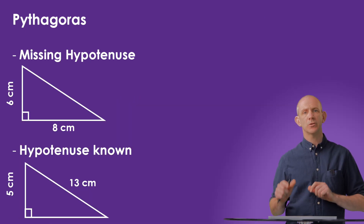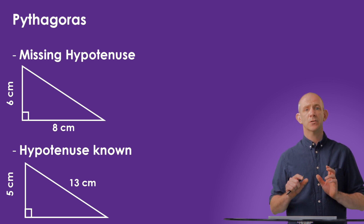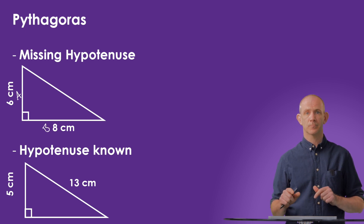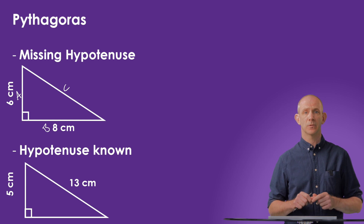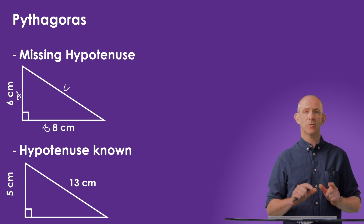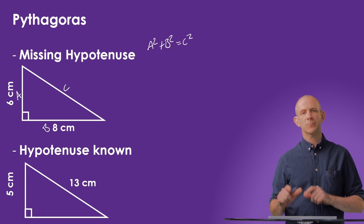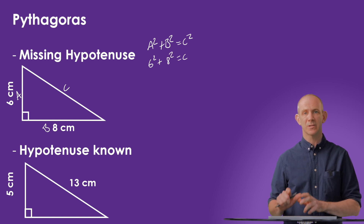Here we've got two triangles. In the first one, we want to find the hypotenuse. To start the process, let's label the sides A, B and C. Remember that C is always on the hypotenuse, which is the longest side and opposite the right angle. As we stated previously, we can state that A squared plus B squared equals C squared. We can then substitute in the numbers for the variables A and B, so 6 squared plus 8 squared is going to equal C squared.